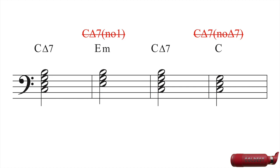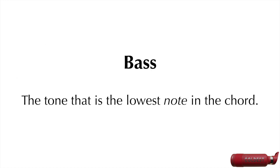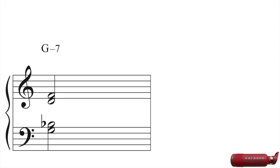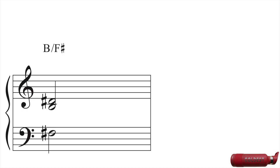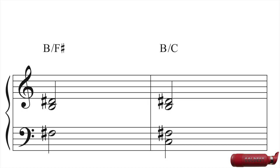The fifth feature of a chord is the bass. The bass is the tone that is the lowest note in the chord. For example, in this G minor 7 chord, the lowest note is G, so the bass is G. But if we want the Bb to be the lowest note, we can move the Bb down an octave — now we have G minor 7 over Bb. We can put any tone we want in the bass, even if it's not part of the original chord. For example, if we have a B major triad, we can put a C in the bass, giving us B major over C.